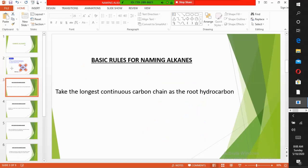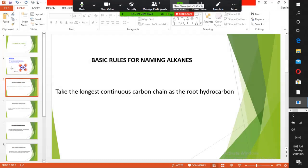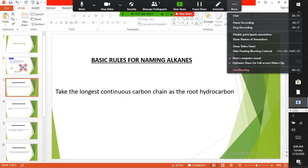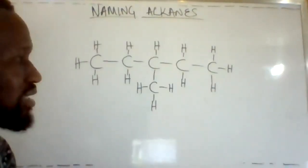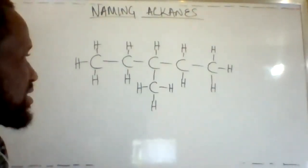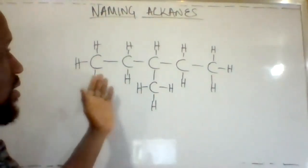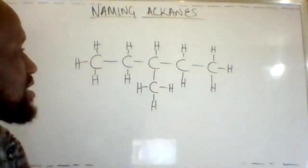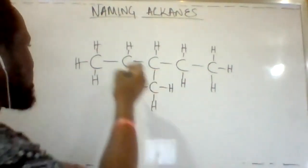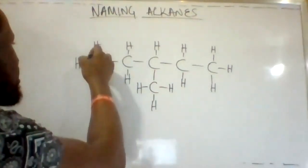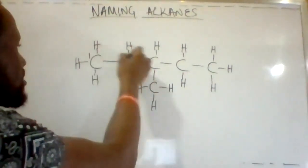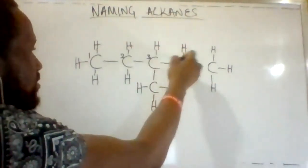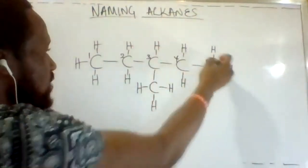The first basic rule is to take the longest continuous carbon chain as the root hydrocarbon. Now consider this hydrocarbon. What is the longest continuous carbon chain? Let's number that: one, two, three, four, five.